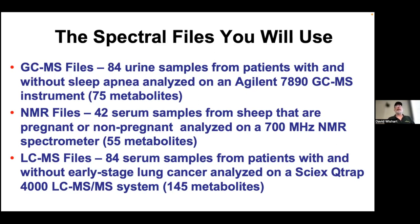The NMR files are 42 serum samples from sheep — pregnant and non-pregnant. The idea is to see if we can find a marker to distinguish between pregnant and non-pregnant sheep in early stages of pregnancy, around 50 days. A simple blood test could tell, which matters for sheep farmers who need to change feeding rations. This is part of a study to develop a biomarker for sheep pregnancy.